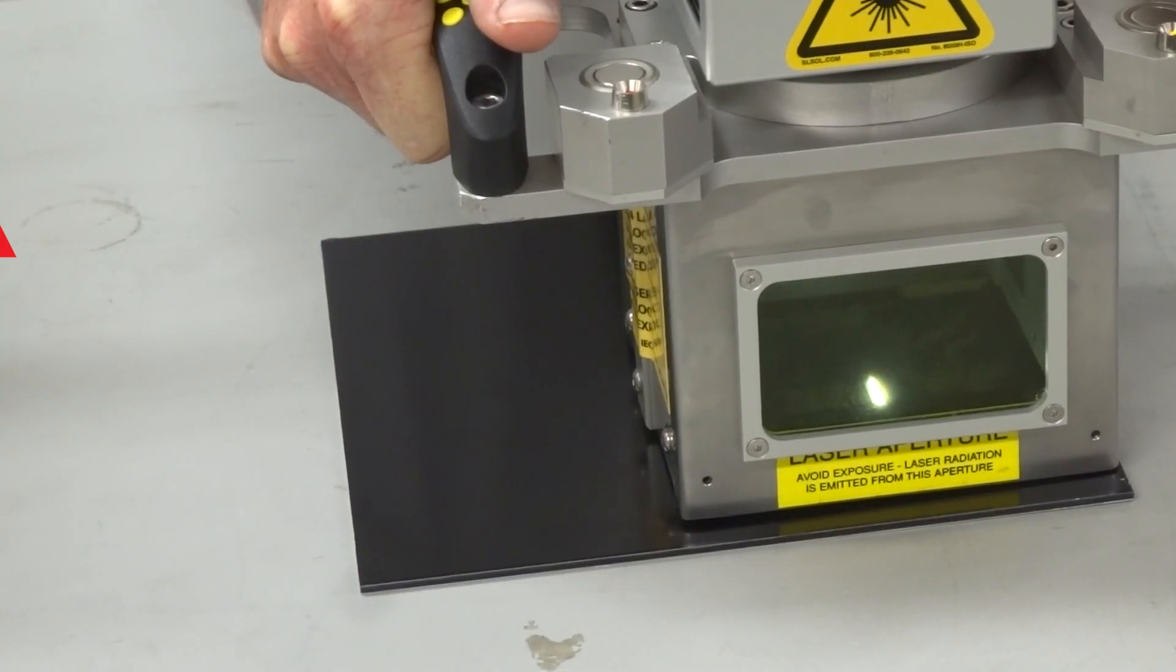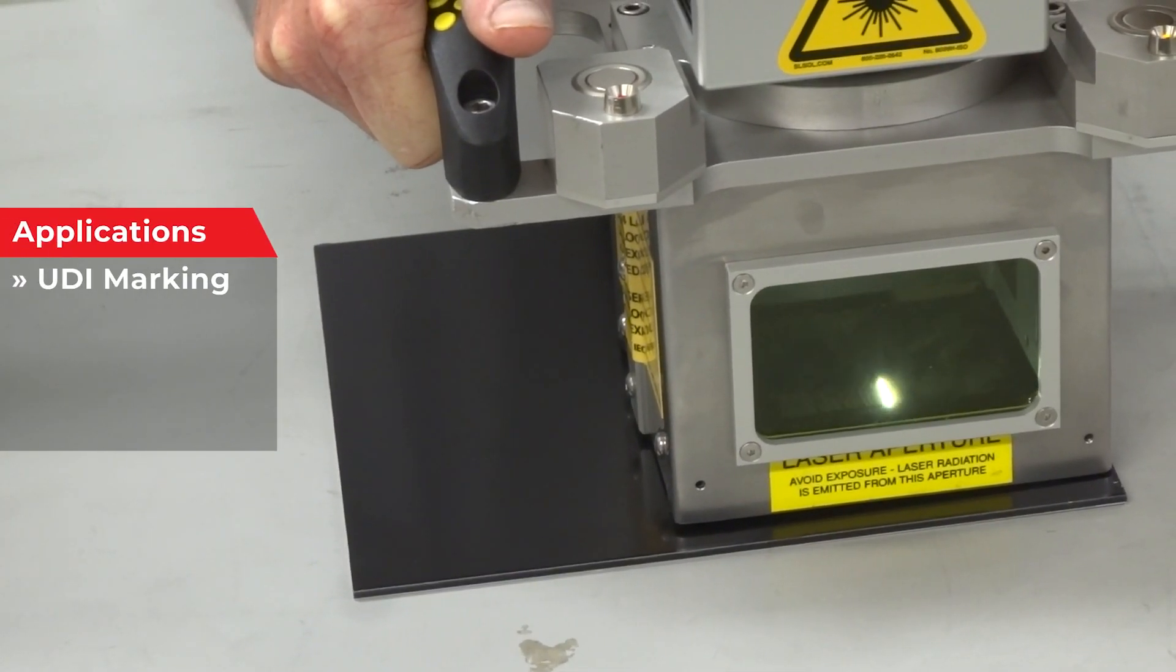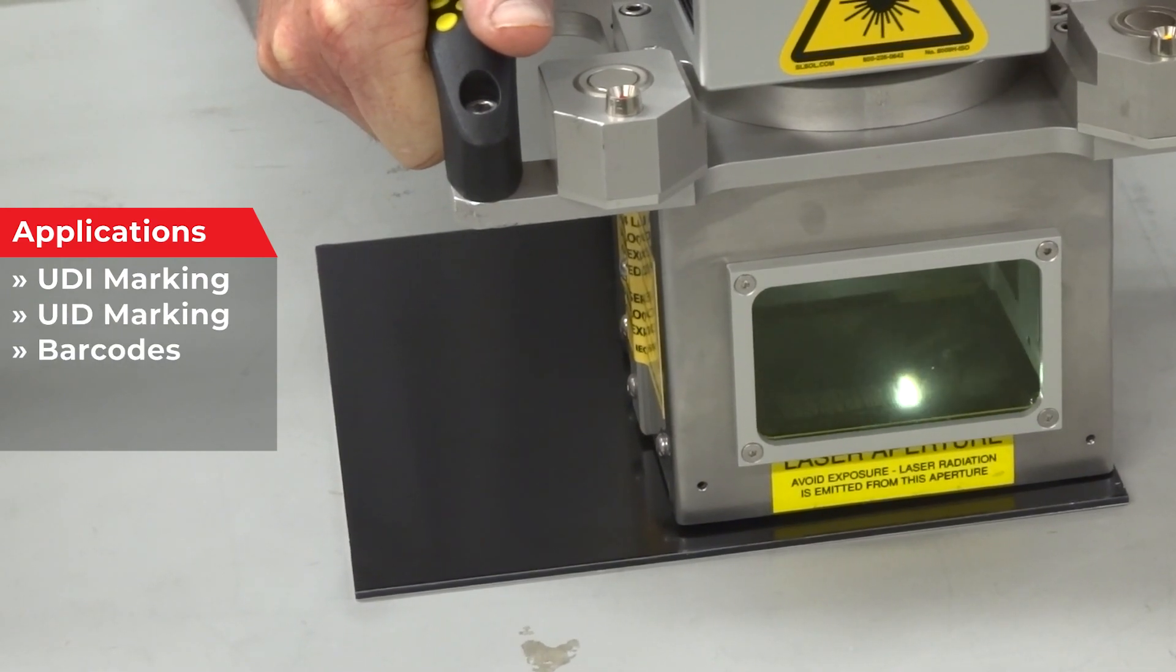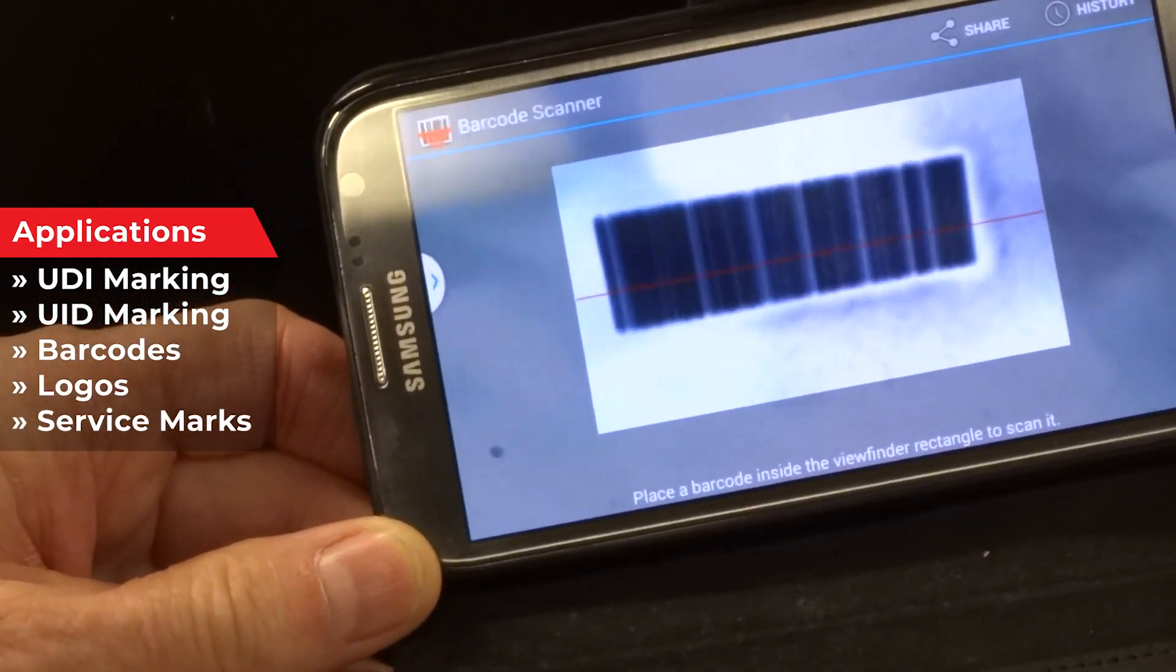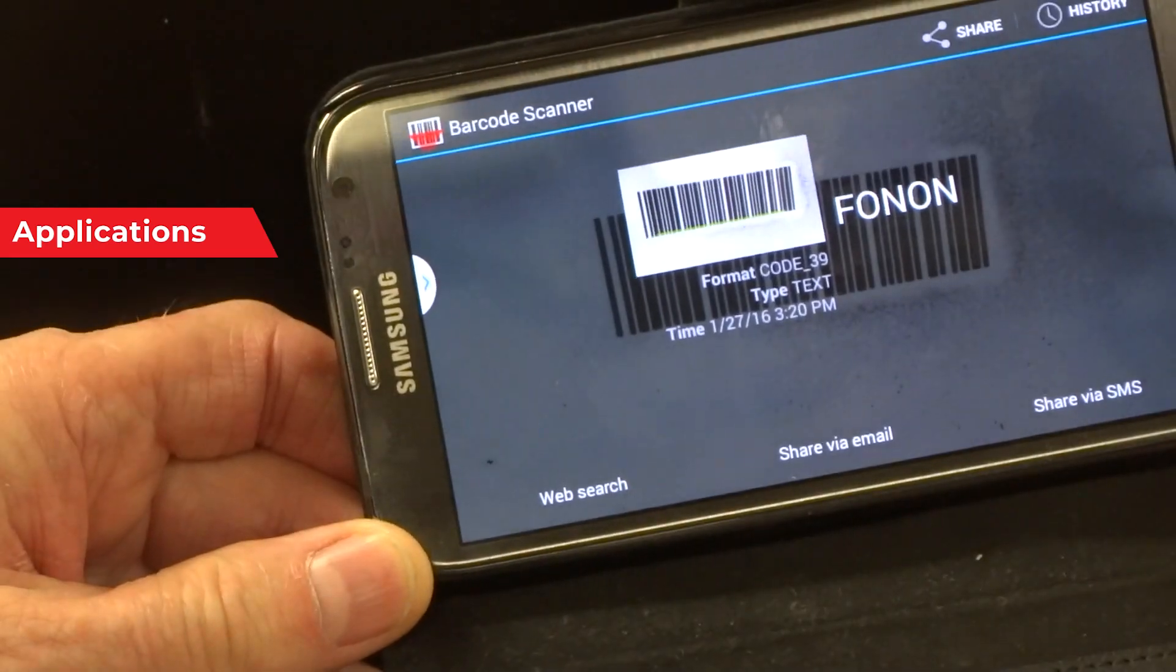All direct part markings, including things like UDI, UID, barcodes, logos, and service marks, are both permanent and legible.